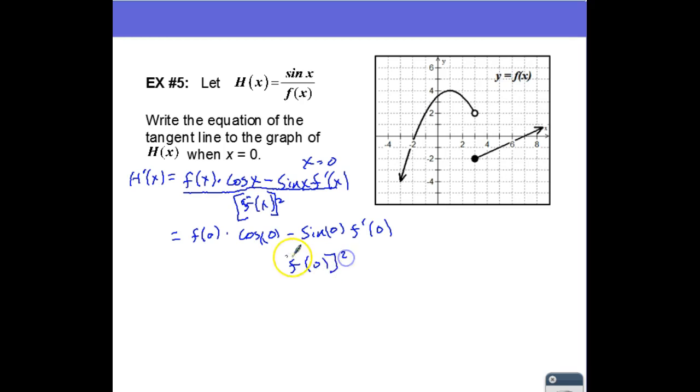f of 0 times cosine of 0 minus sine of 0 times f prime of 0 over f of 0 squared. And f of 0 is 3.5 times cosine of 0. So you can get this from your calculator or the unit circle. But at x equals 0, cosine is equal to 1. And sine of 0 is equal to 0 times f prime of 0 over f of 0, which is 3.5. I'm going to square that.